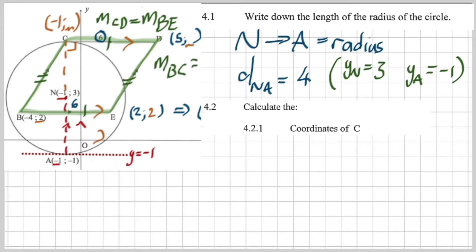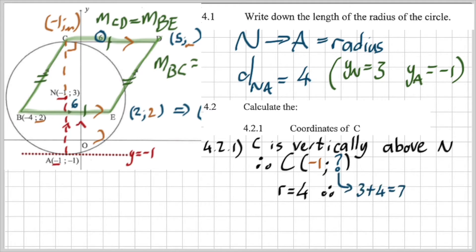Now if I look at 4.2, it says there, 4.2.1, they're looking for C's coordinates. First of all, remember that C is vertically above N. So the X value is negative one. But what is the Y value? Remember that the radius is four. So to go from N to C, I just go vertically up four units. So in other words, three plus four is seven. Where does the three come from? Remember that's the X value or the Y value of N. My apologies. So the Y value plus four. Therefore, C is equal to negative one comma seven.